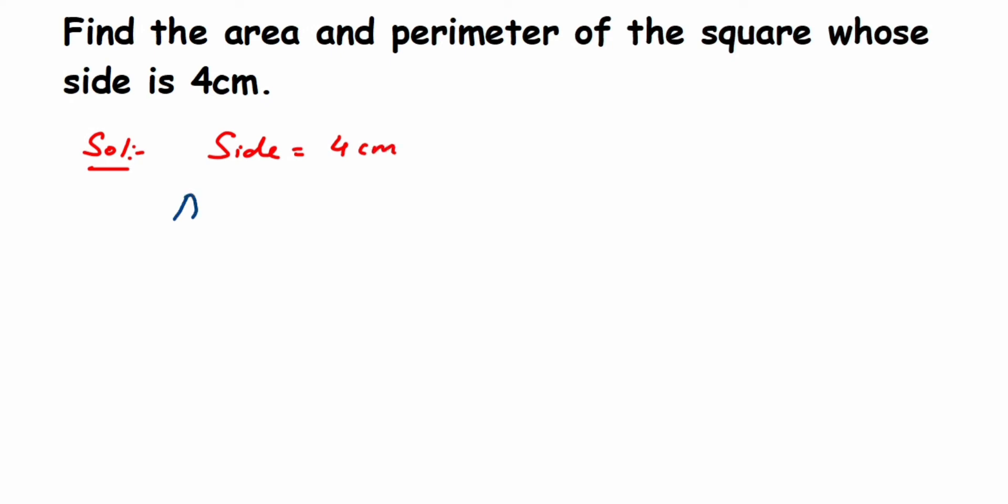So area of square - the area of square formula is side into side, or side squared. So side multiplied by side, or side squared you can write down, which is equal to 4 centimeters multiplied by 4 centimeters.